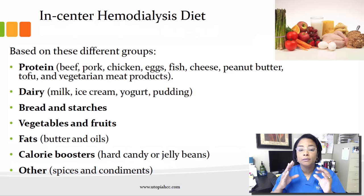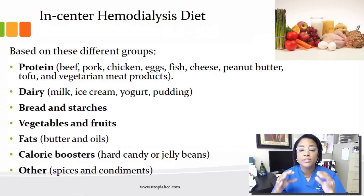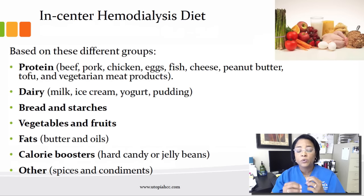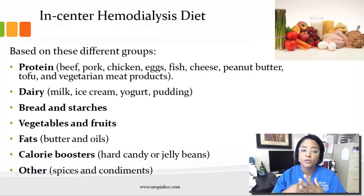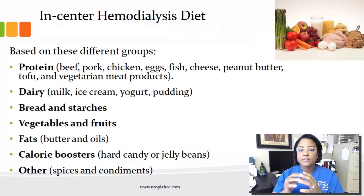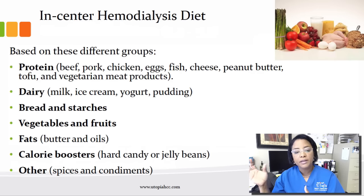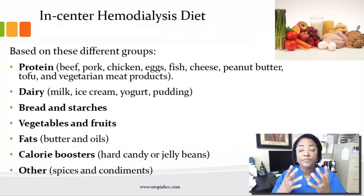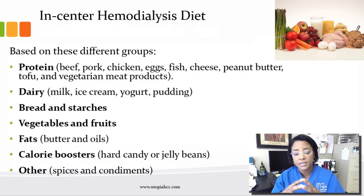The in-center hemodialysis diet is based on different food groups: proteins including beef, pork, chicken, eggs, fish, cheese, peanut butter, tofu, and vegetarian meats; dairy such as milk, ice cream, yogurt, and pudding; bread and starches; vegetables and fruit; fats like butter and oils; calorie boosters like hard candy or jelly beans; and others like spices and condiments.